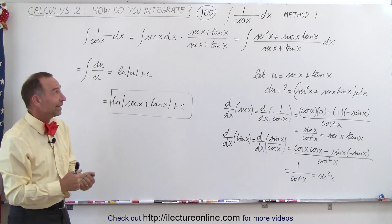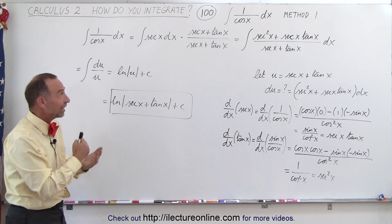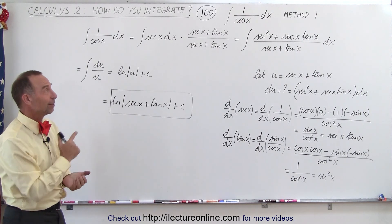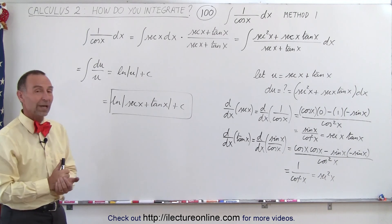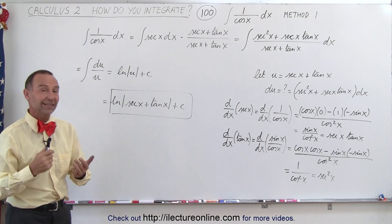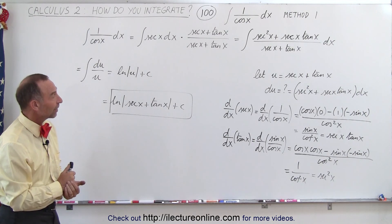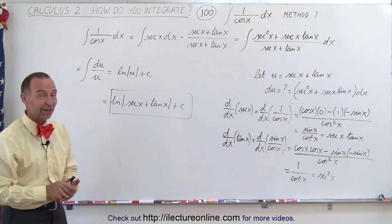Again, if you can't think of that trick, it might take you a long time to figure it out, but that's one way in which we can get the integral of 1 over the cosine of x.